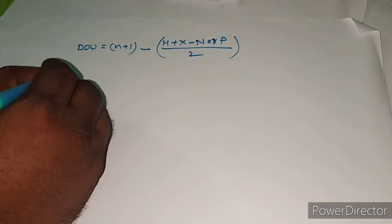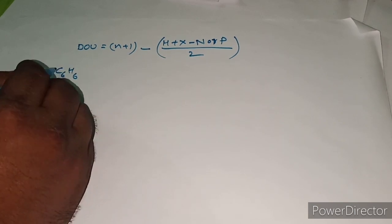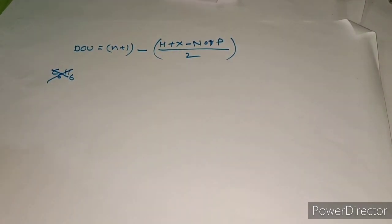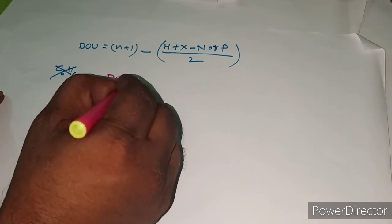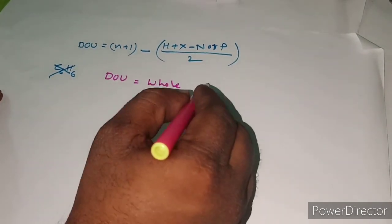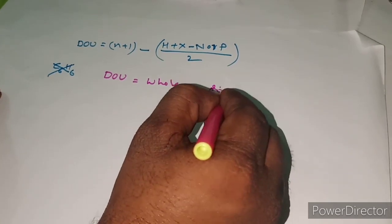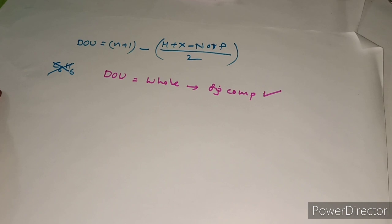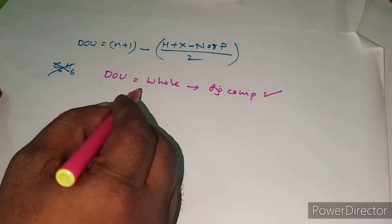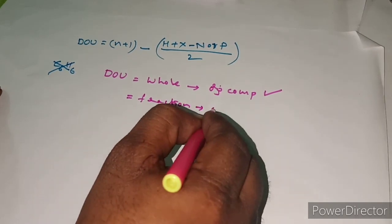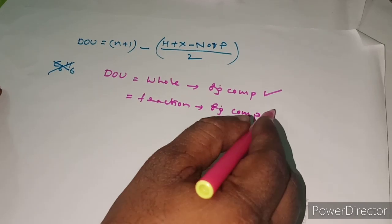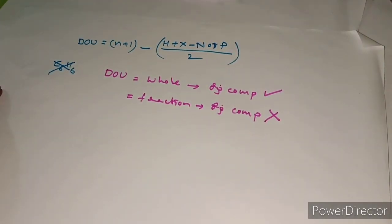Before going to the examples, here is one important conclusion. After calculating the degree of unsaturation, remember: if the degree of unsaturation is a simple whole number, that organic compound can exist. If the degree of unsaturation is a fraction, that organic compound does not exist — it is meaningless and not significant.